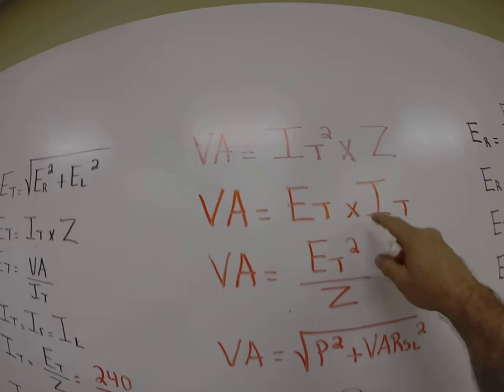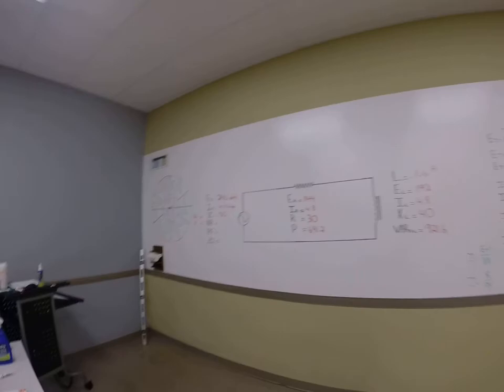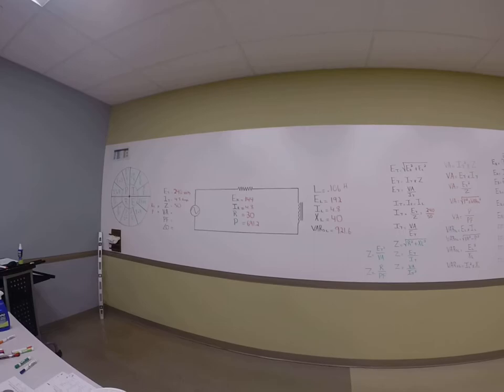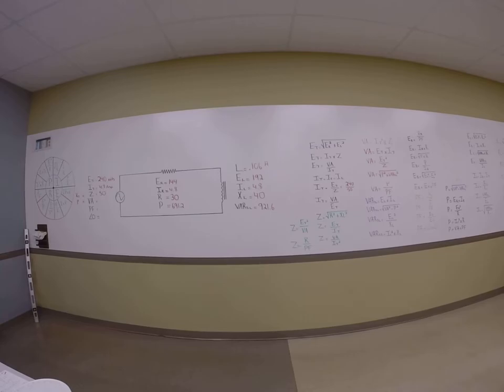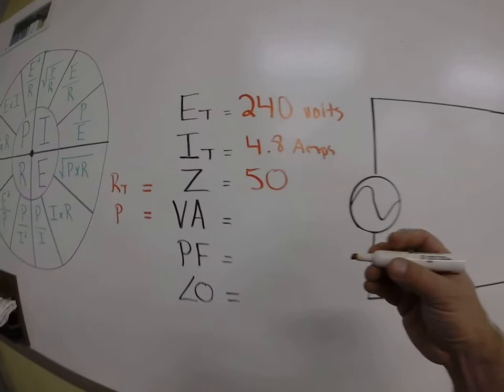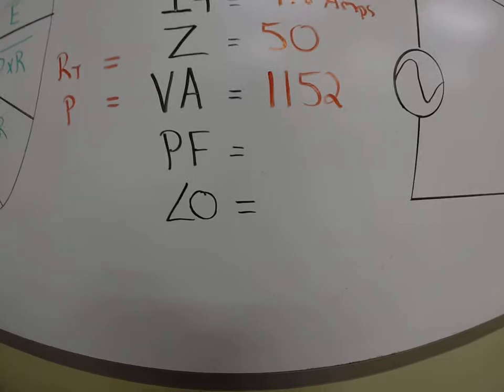equals E times I across the total column. We can do this with Ohm's Law all day, too. This is really E squared divided by R. This is really I squared times R, just like what's on the Ohm's Law wheel. You need to see that relationship. So let's just pick one. We'll come back over here to my calculator, and we'll say, how are we going to solve for VA? Well, why don't we just do E times I, 240 times 4.8 equals 1,152. So we have 1,152 watts.